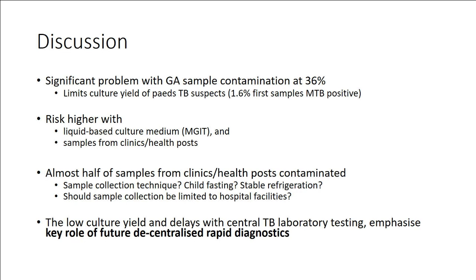The risk factors associated with contamination of gastric aspirate samples in children were two: liquid-based media and samples from smaller sites — clinics and health posts. One might ask, at least in the Botswana setting, why was this? Was it sample collection technique, refrigeration, or whether the child was fasting? From a public health standpoint, one might ask whether gastric aspirates should only be done at higher-level facilities. The low culture yield and delays with central TB lab testing really emphasize the key role of future decentralized culture diagnostics. Xpert hasn't given us the solution yet in pediatrics, but it would be nice to have a facility-based test that could accurately diagnose TB in children.